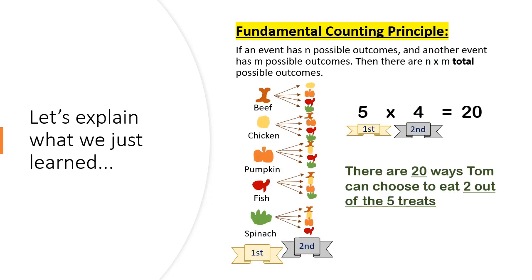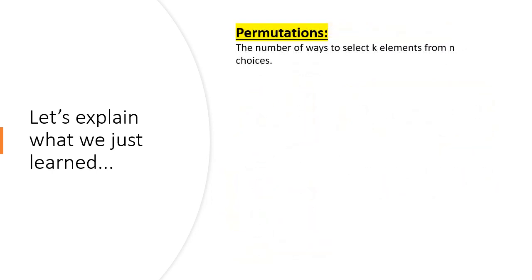So what does that mean? Basically, this is saying that if, for example, there are five choices for Tom and then only four choices for Tom, then Tom can make a total of 5 times 4 equals 20 different choices. Okay, so that wasn't so bad. Hopefully you're hanging in there with me.